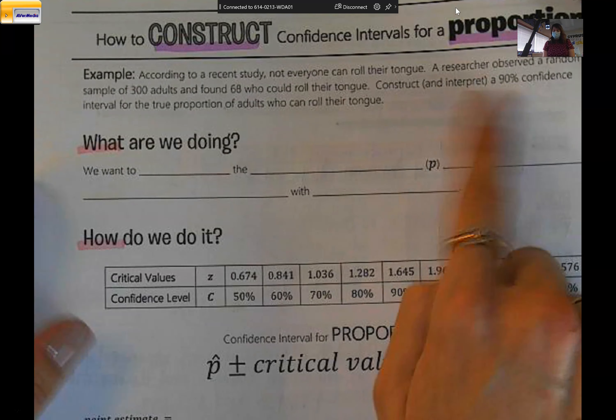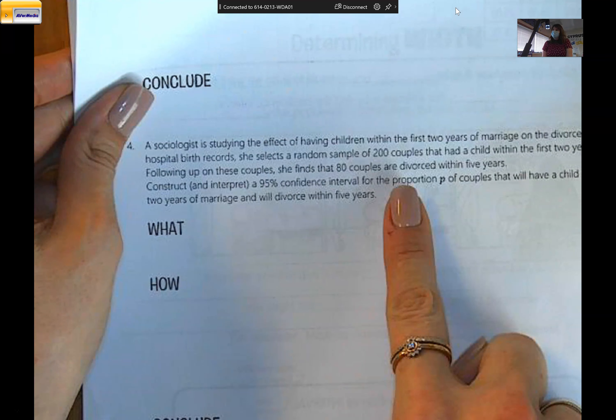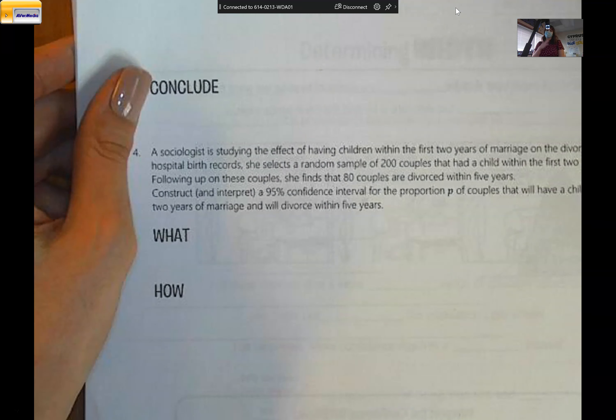And now all of our problems are going to say proportion, find the confidence interval for the true proportion. So it's always going to tell you in the prompt which one you're working with.